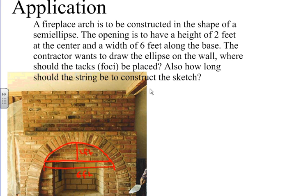The contractor wants to draw the ellipse on the wall. Where should the tacks or foci be placed? What we're going to do is use the trick of identifying the foci. Where do the foci have to be placed? We're looking for where these foci have to be along the major axis. This obviously is going to be the major axis. You can see it there, and it's going to be larger. So to help us figure this out, we want to figure out where the foci are.